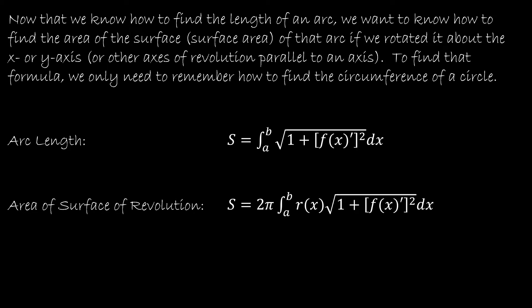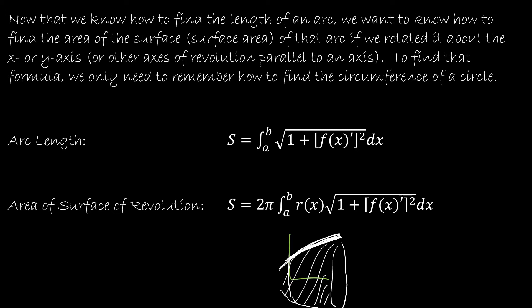If I have a graph of a function and I revolve that graph around the x-axis — we've been doing this a lot lately so you can visualize what's going on — if I only care about the surface area on the outside of this figure, which would make a bit of a cone shape, what I'm doing is taking the circumference of the circle (which is 2πr) multiplied by the arc length, and that gives me the surface area.